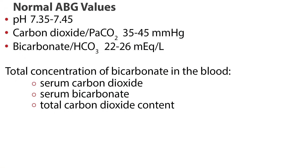When analyzing ABGs, there are several normal values that need to be memorized. When assessing acid-base status, the most important component to look at first is the pH. 7.4 is the perfect pH, with a normal range of 7.35 to 7.45. PaCO2, the partial pressure of carbon dioxide, reflects alveolar function and ranges from 35 to 45 mmHg. Bicarbonate, or HCO3, the major base component, has a normal value of 22 to 26 mEq per liter. The total concentration of bicarbonate in the blood may be referred to as serum carbon dioxide, serum bicarbonate, and total carbon dioxide content.